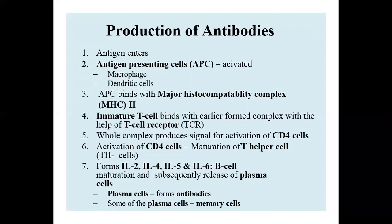These T helper cells produce interleukins 2, 4, 5, and 6, which stimulate B cell production. These interleukins are essential for B cell maturation and the subsequent release of plasma cells. Plasma cells are the production house of antibodies. Some plasma cells also act as memory cells for future antibody responses.